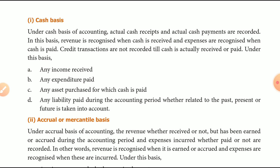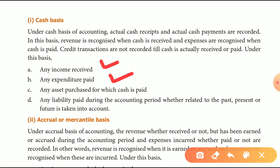For example, income received and expenditure paid are recorded here — meaning cash is involved. Any asset purchased with cash is also recorded under cash basis.